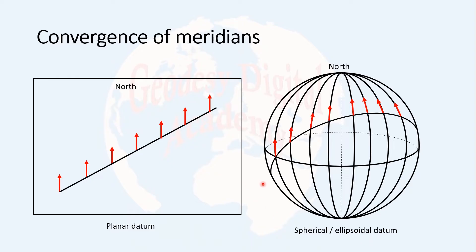Instead of a line, we have a great circle here, and we know that meridians show the directions to north. Since all meridians converge at the point which is north, all directions of north are convergent as well — therefore they are not parallel. In this lecture, I am going to explain how to consider convergence of meridians in our computations.